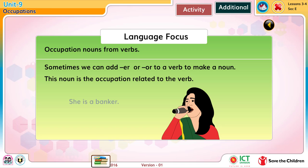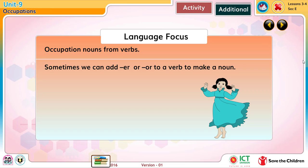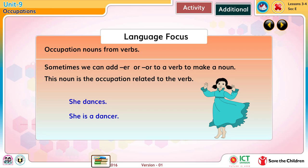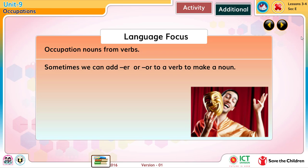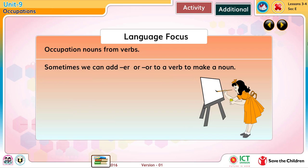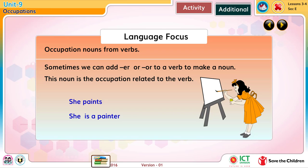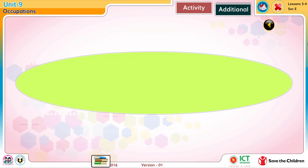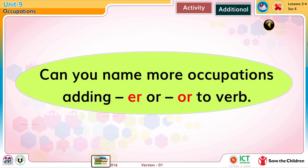For example: She dances — she is a dancer. She sings — she is a singer. She paints — she is a painter. Can you name more occupations by adding -er or -or to a verb?